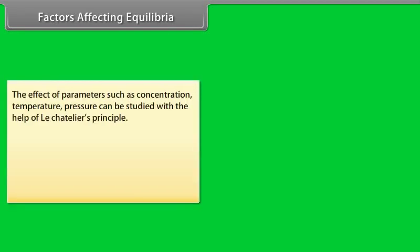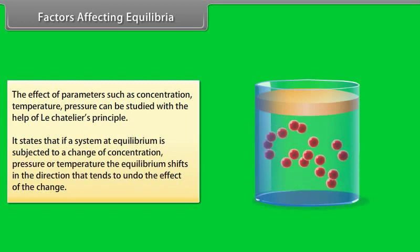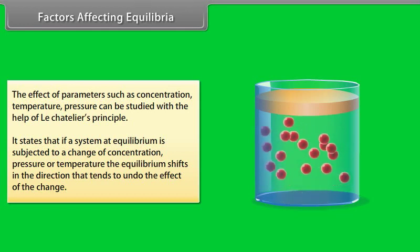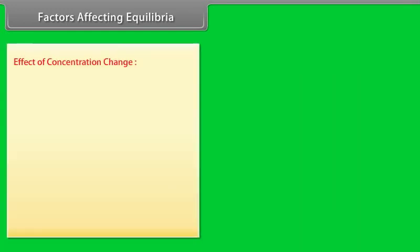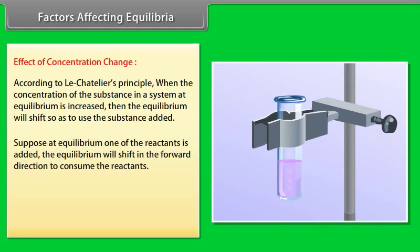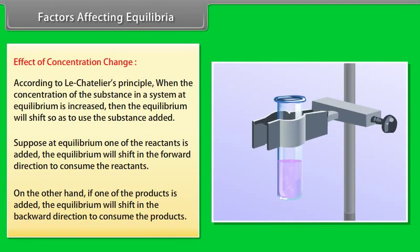Factors affecting equilibria: The effect of parameters such as concentration, temperature, and pressure can be studied using Le Chatelier's principle, which states that if a system at equilibrium is subjected to a change of concentration, pressure, or temperature, the equilibrium shifts in the direction that tends to undo the effect of the change. Effect of concentration change: When the concentration of a substance in a system at equilibrium is increased, the equilibrium shifts to use the substance added. If a reactant is added, the equilibrium shifts in the forward direction; if a product is added, the equilibrium shifts in the backward direction.